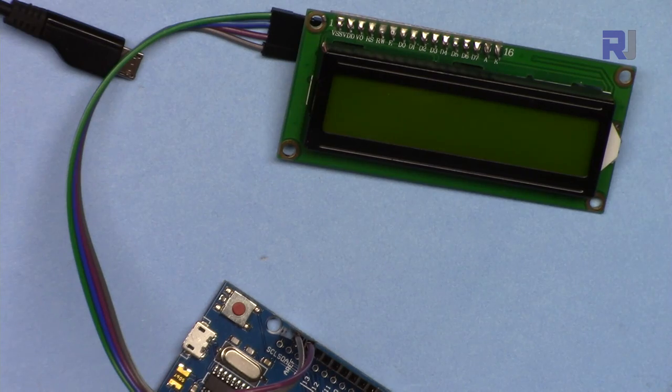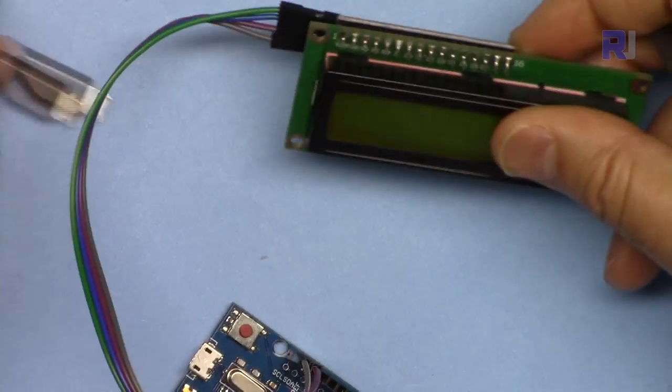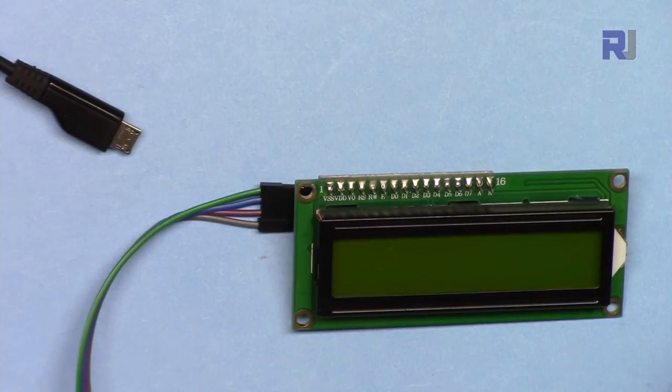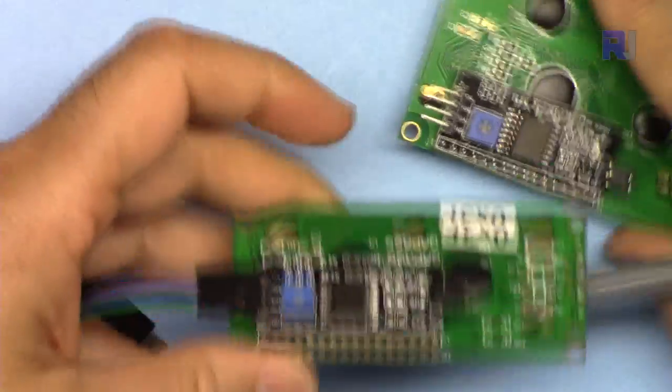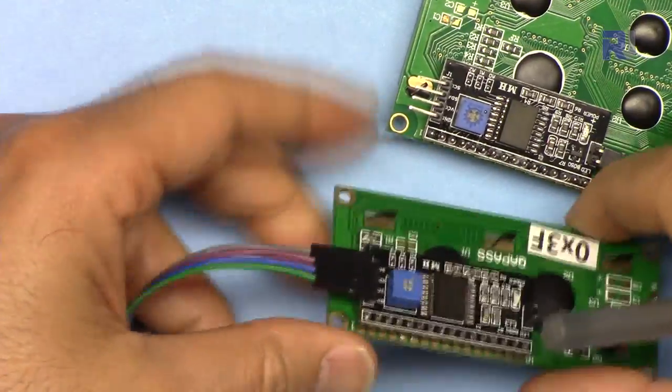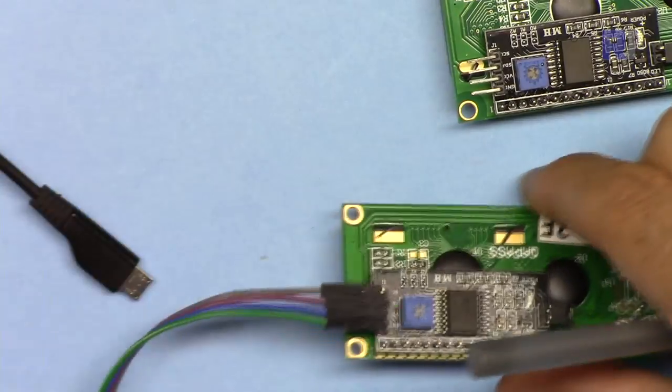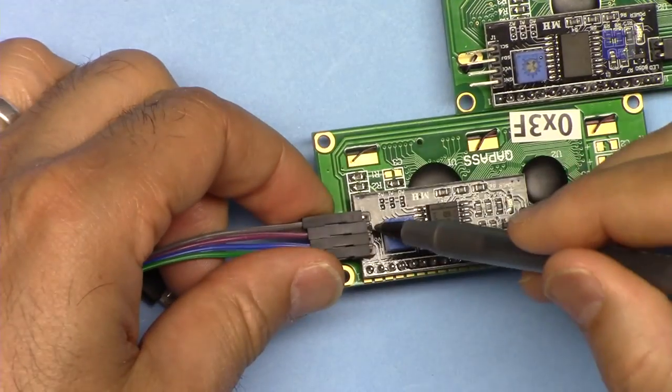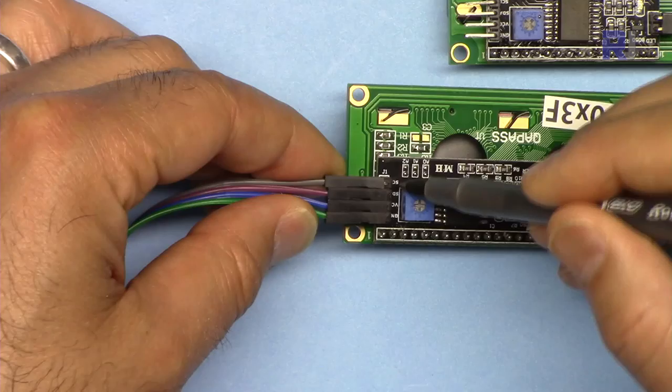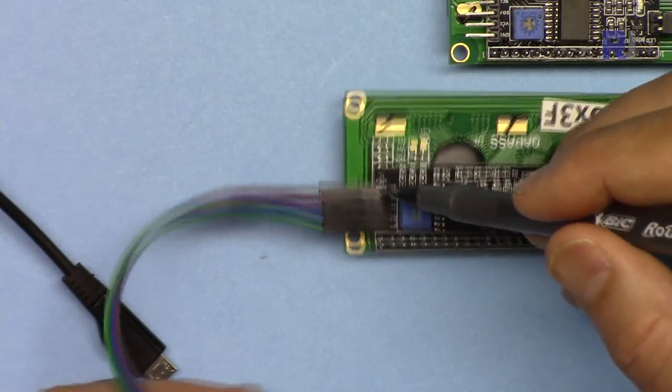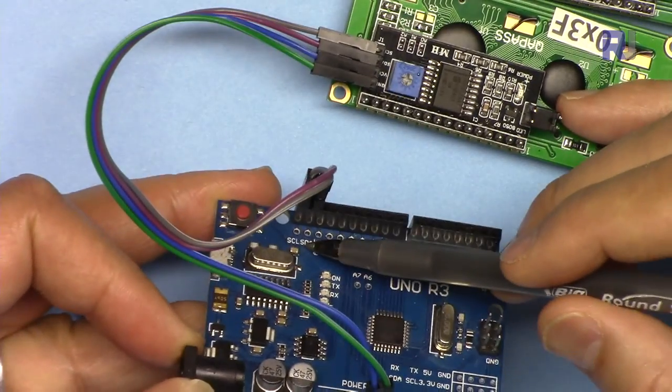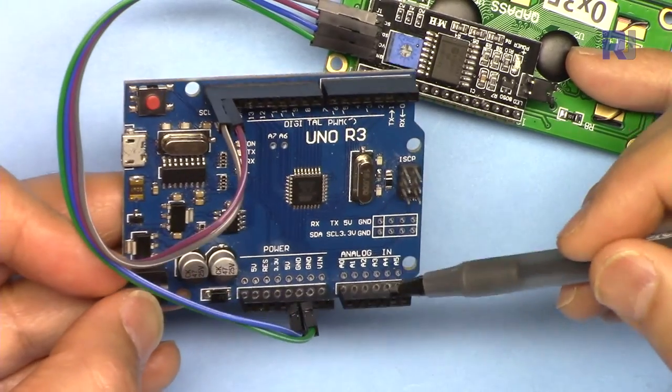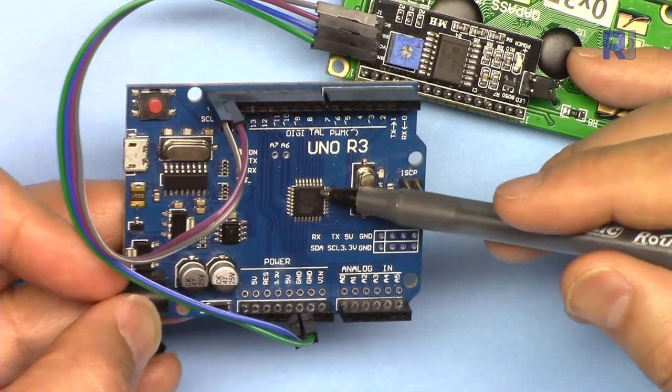Now let me explain the wiring for this LCD screen. Either this module or this module, because they have the same i2c module, they're exactly the same. We have SCL and SDA, VCC and ground. SCL and SDA we have on Arduino. SDA is A4 and SCL is A5 on Arduino Uno.